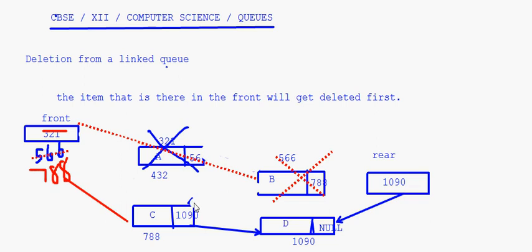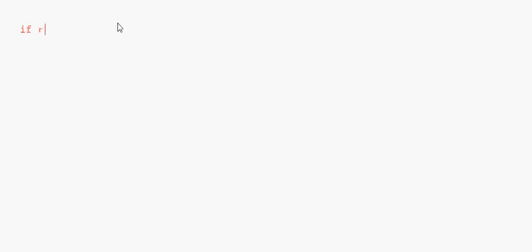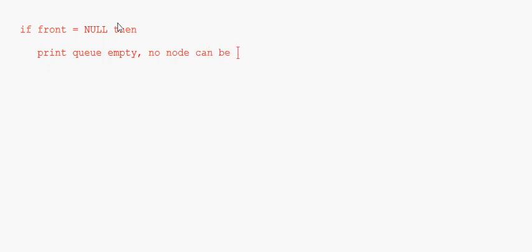The link we now have is from front to 788, and from 788 to 1090, with rear pointing to 1090. This is basically how deletion works. Now I'll write down the algorithm: if front is equal to null, then the queue is empty — print 'Q empty'. No node can be deleted because there is no node in the queue.